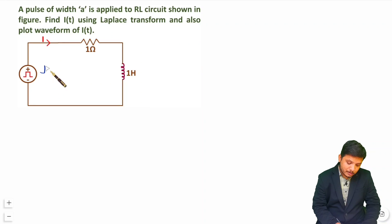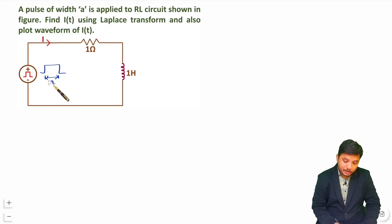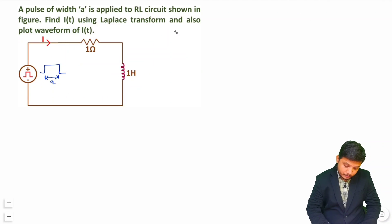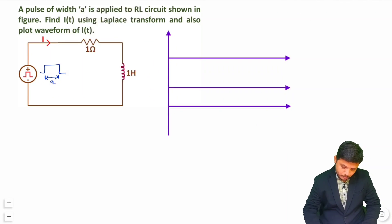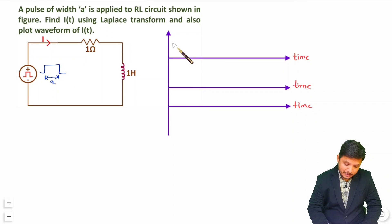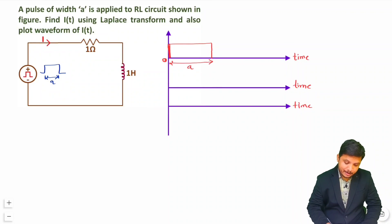The source has a pulse and the width of this pulse is A. First of all, you should understand how to generate this pulse. Here we have the time axis, the amplitude axis. The pulse starts from T equals 0, its width is A, and its magnitude is 1.